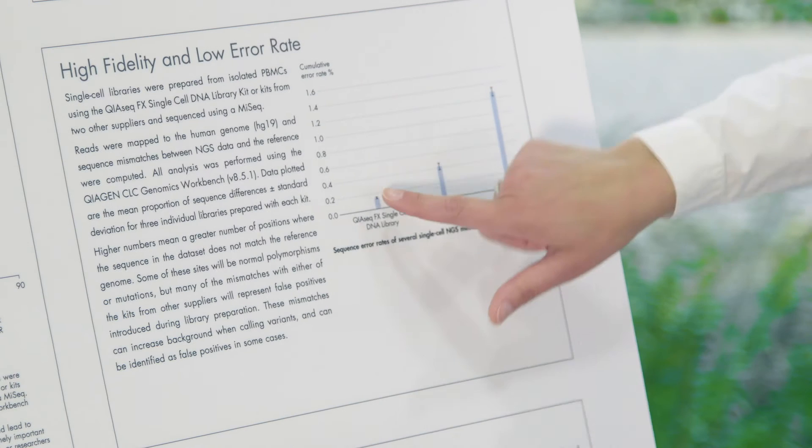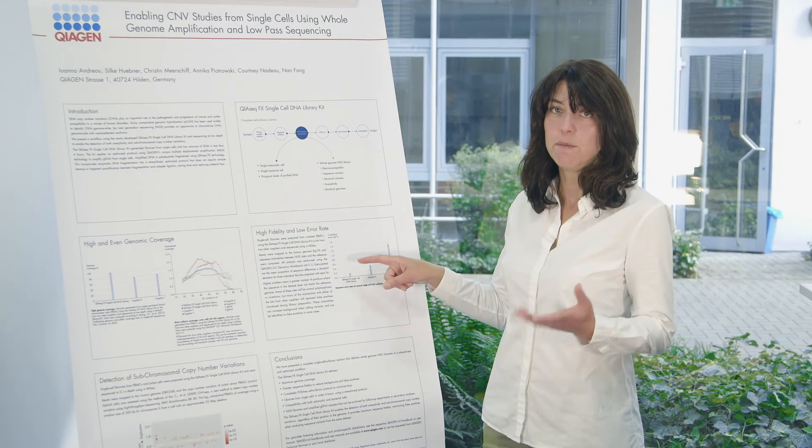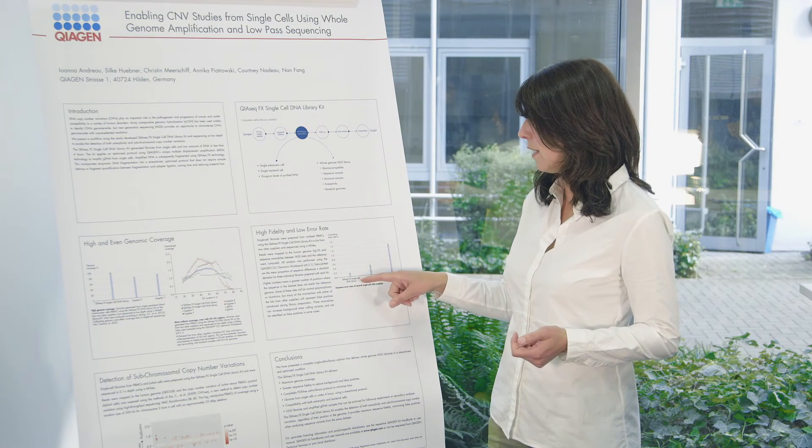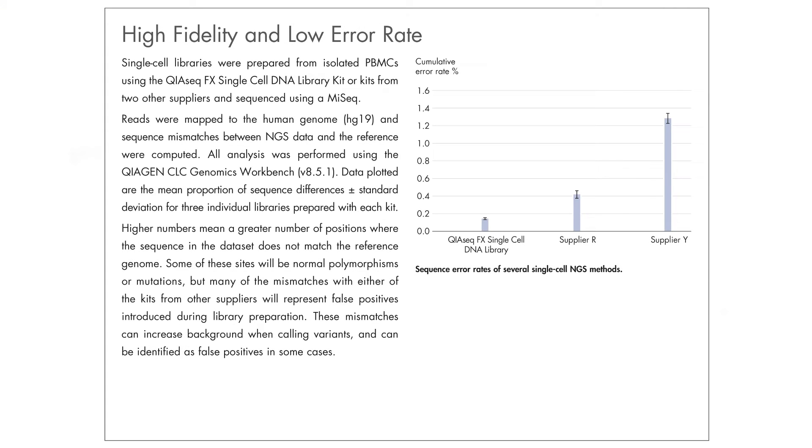We can see here that we have a very low percentage of error rates, of mismatches to the reference genome with the QIAGEN FX single cell DNA library kit while we have very high error rates using the other PCR based kits.